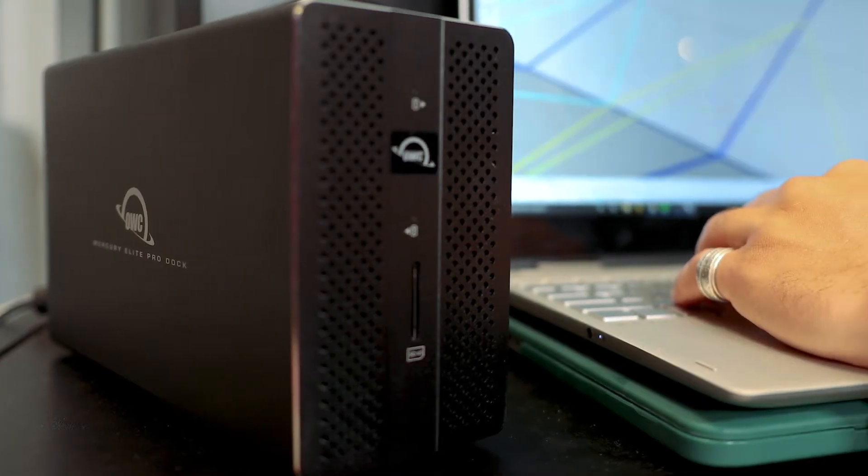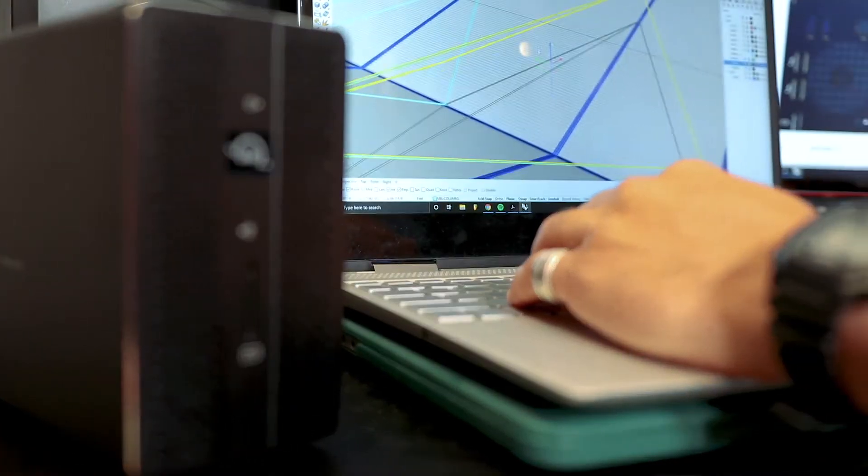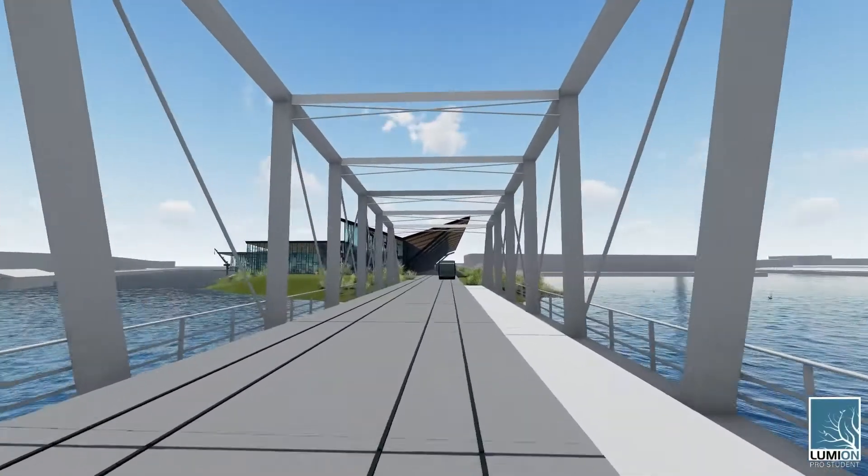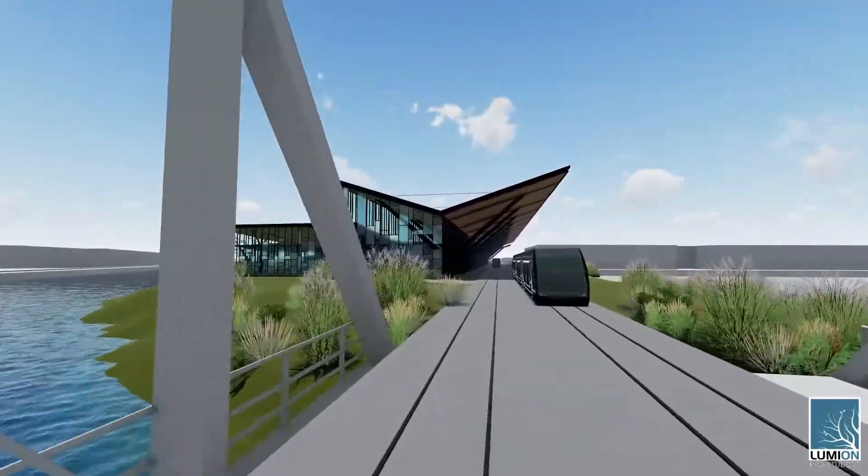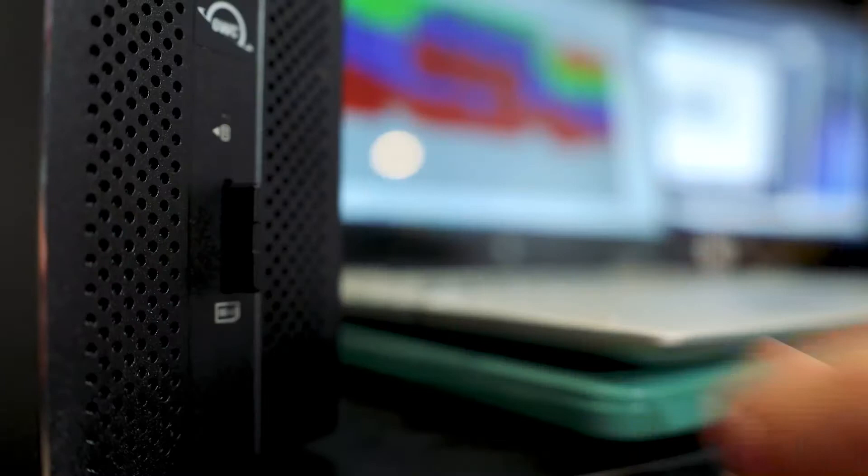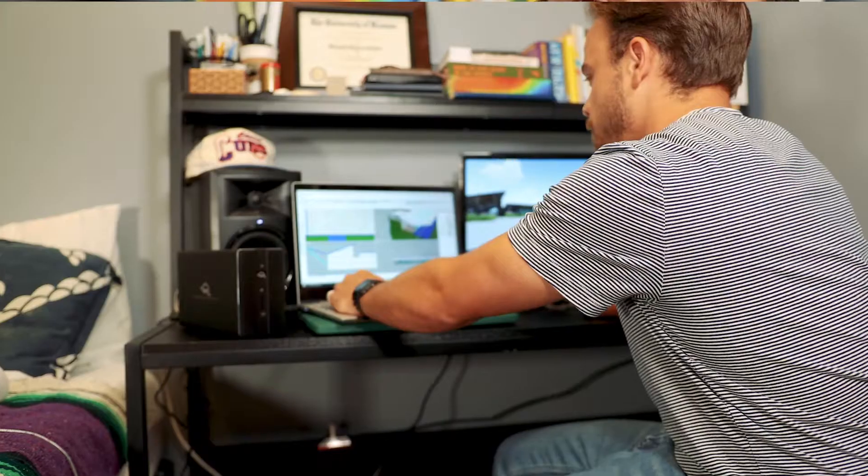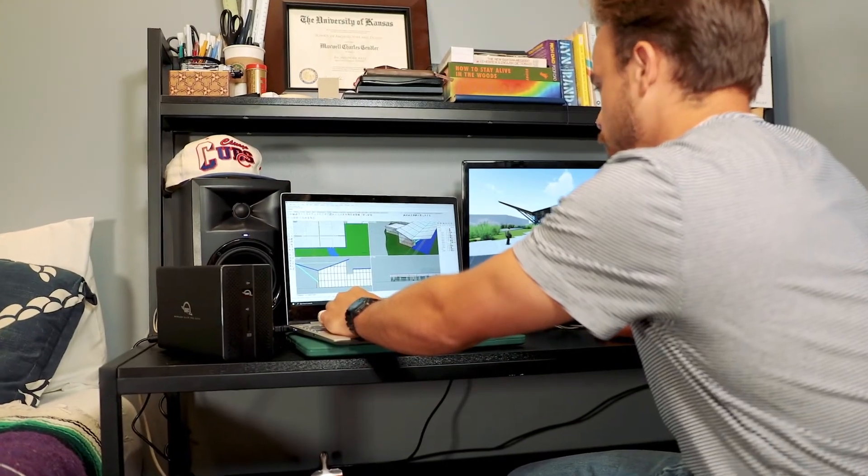I really love the Mercury Elite Pro Dock because of its insane amount of storage. File sizes and processing power that I need for the software that I run for architecture takes up a lot of space. It allows me to store all my files in one place, back everything up also in one place, and also provide me with a very flexible workspace.